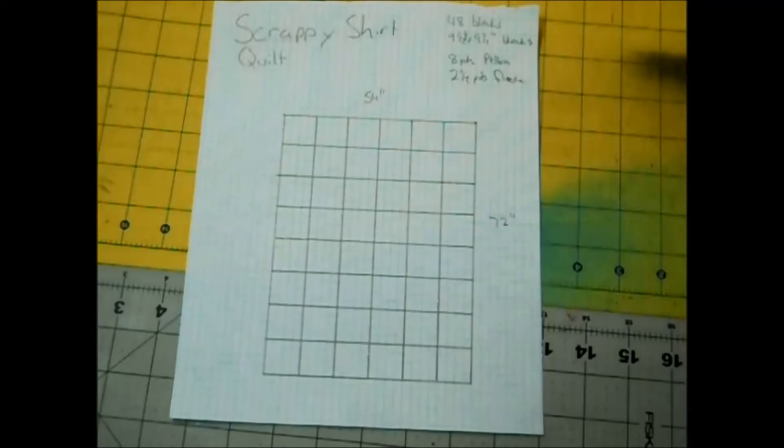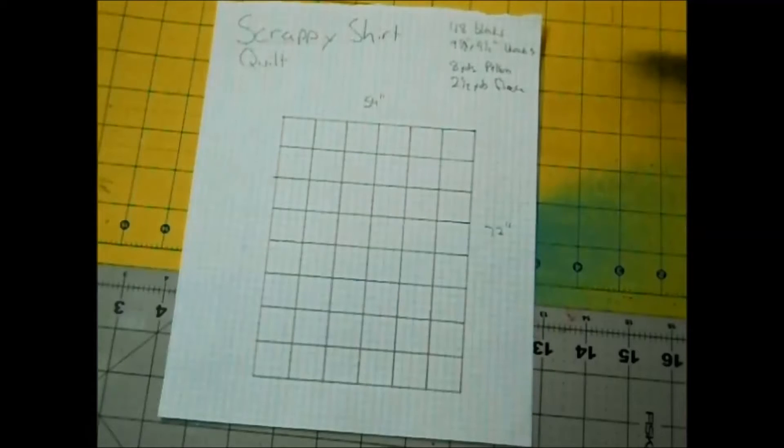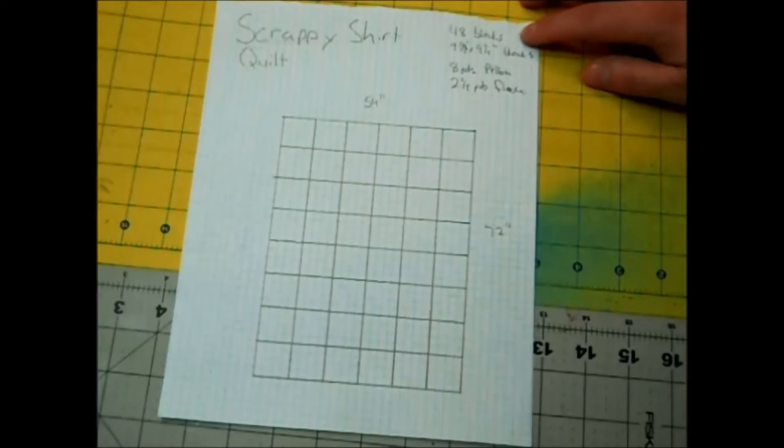I'm a pretty big guy and some of the quilt patterns that I get just aren't long enough for me. There's nothing I hate worse than my feet sticking out when I'm trying to cuddle up on the couch. To make this scrappy shirt quilt we're going to need 48 blocks. Each of those blocks is going to measure nine and a half inches by nine and a half inches.